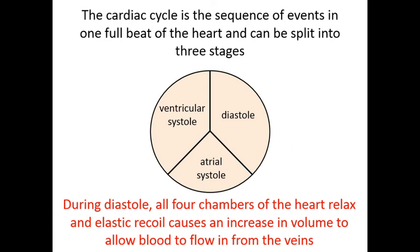The last phase of the cardiac cycle is diastole — the heart relaxing. Neither the atria nor the ventricles are contracting. The 'lub' sound is atrial systole and the 'dub' is ventricular systole; the silence between is diastole. All four chambers relax and elastic recoil increases volume, decreasing pressure, which allows blood to flow in from the veins down a pressure gradient. This fills the atria ready for the next atrial systole.